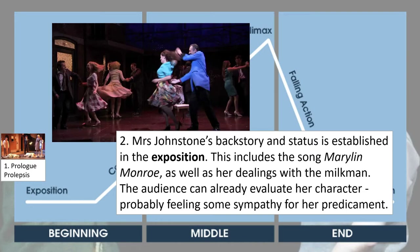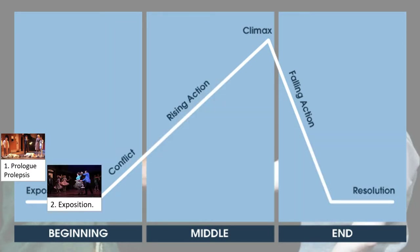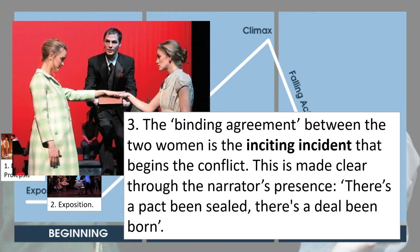The exposition is crucially the part of the structure immediately before the main conflict is introduced, and the conflict is introduced in what we can call an inciting incident. In Blood Brothers, this happens where Mrs. Johnson and Mrs. Lyons meet and seal the pact over the Bible. This is the inciting incident that begins the conflict — the underlying conflict of the women's guilt and the boys' lives growing up living a lie. Russell foregrounds this event through the narrator's words, where he describes 'a pact been sealed, a deal been born.' We in the audience understand this is the beginning of something dark, leading to the tragic scene shown at the very beginning.